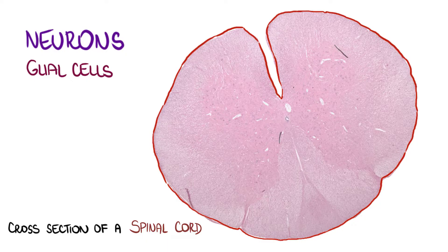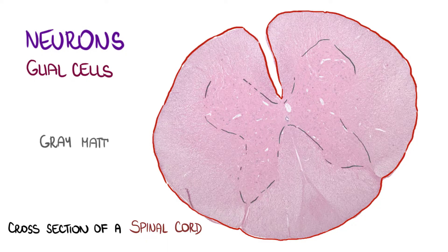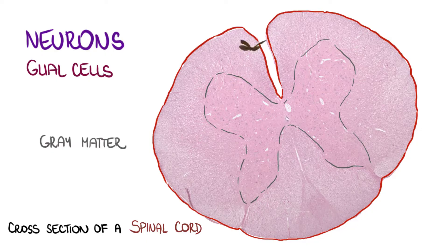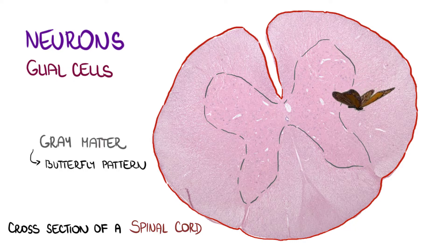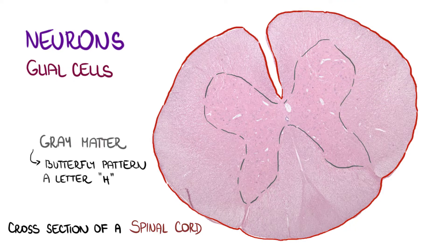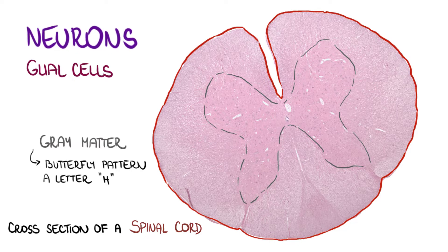We can recognize gray matter in the center and white matter in the periphery. Gray matter in the center has a typical butterfly pattern — it really looks like butterfly wings or a letter H — but what's more important is that we can find big neurons there.